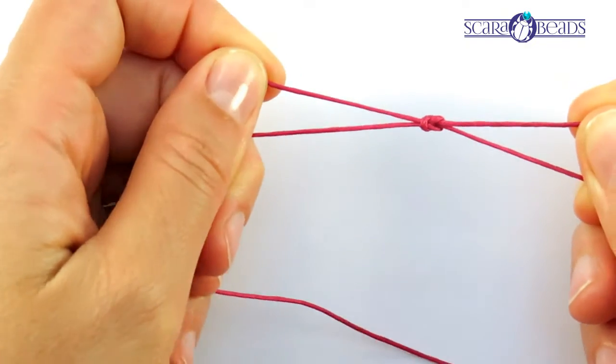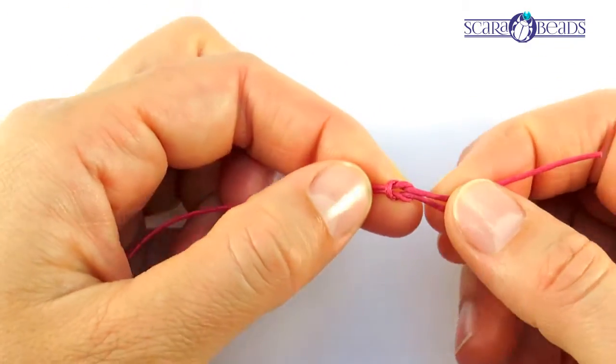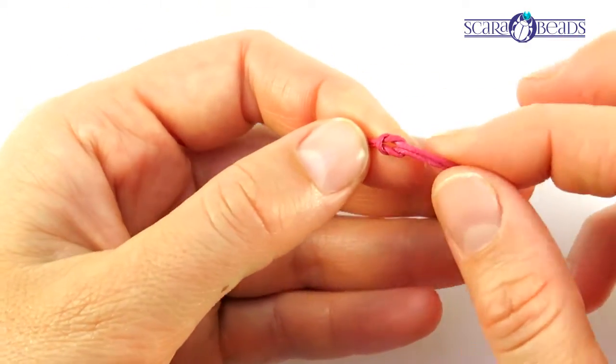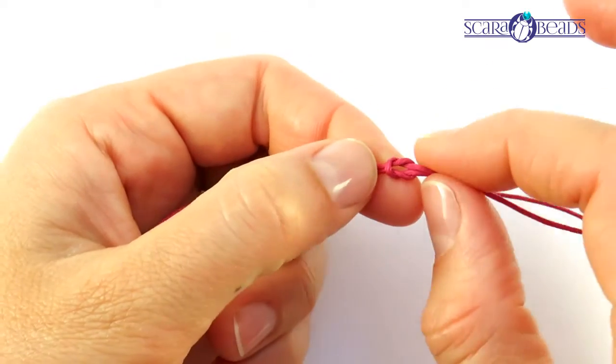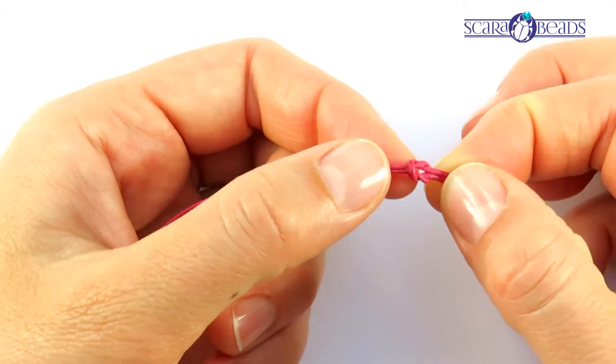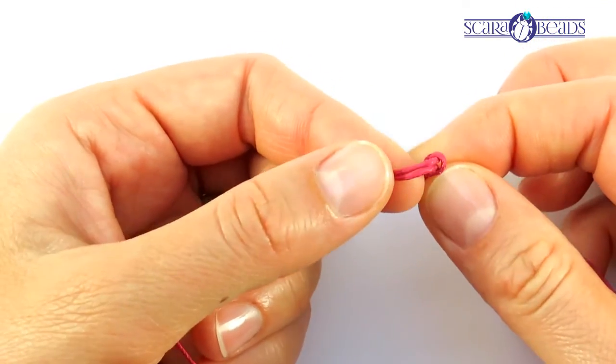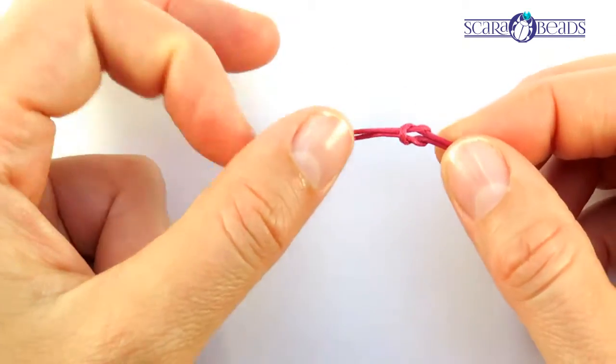Here you can see that both ends on the right side are going out next to each other above the thread and on the left side next to each other below the thread. That we call reef knot.